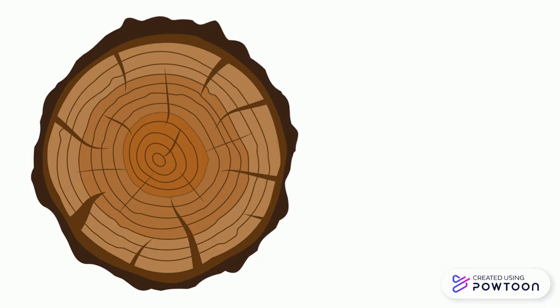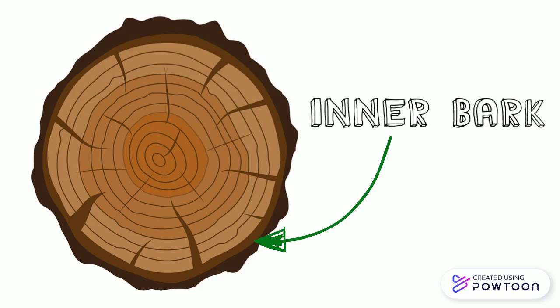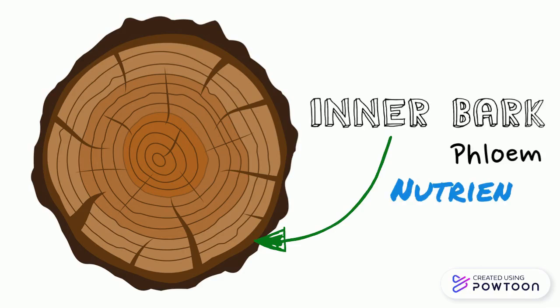Just within the outer bark is what we call the inner bark. Inner bark contains a vascular tissue that we call phloem. Phloem is responsible for transporting and distributing nutrients to the plant.